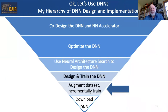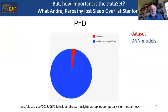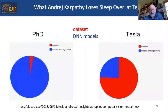The next step is to augment the data set and incrementally train. I like this sequence from Andrej Karpathy, now at Tesla. When he was a graduate student at Stanford, he felt the bulk of deep learning was about developing models and algorithms, with very small importance given to data sets. But since joining Tesla, he sees a much larger percentage devoted to data sets and much less to models and algorithms—and he would put even more emphasis on data.